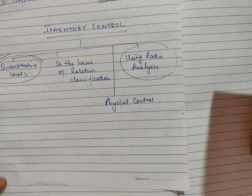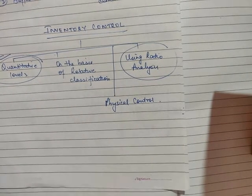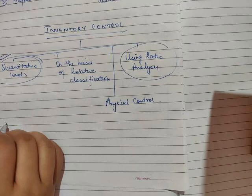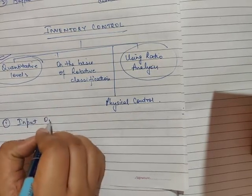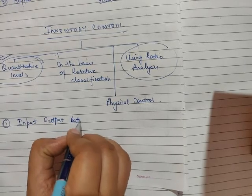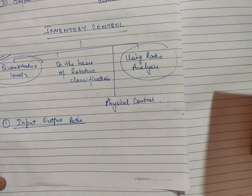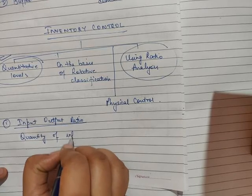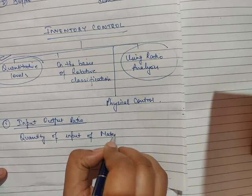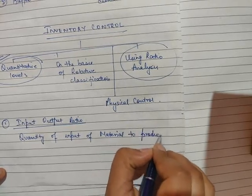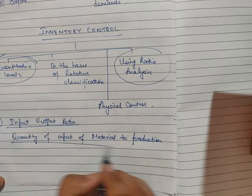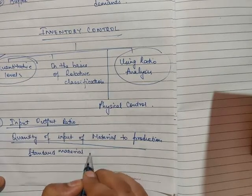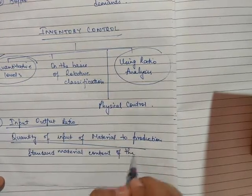So what is a ratio? A ratio is when one item is expressed in relation to another. The first ratio we are going to look at is the input-output ratio. As the name suggests, it is nothing but the ratio of the quantity of input of material to production, and the standard material content of the actual output.